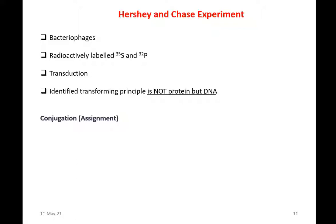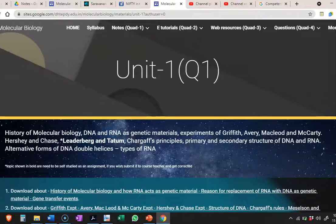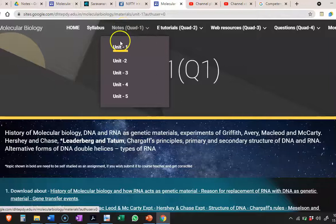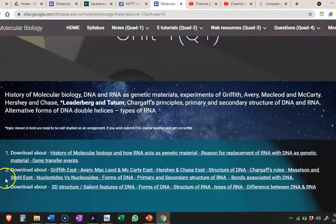The next important experiment that proved DNA is a genetic material is the Hershey and Chase experiment. They used bacteriophages as a model and radioactively labeled sulfur-35 and phosphorus-32 to label specifically the proteins and nucleic acids respectively, confirming that nucleic acid is the one specifying heritable change. The phenomenon was identified as transduction, and the conclusion of this experiment is that the transforming principle is DNA and not protein. Notes for this Hershey and Chase experiment are available on our webpage in the notes tab in Unit 1, under serial number 2.